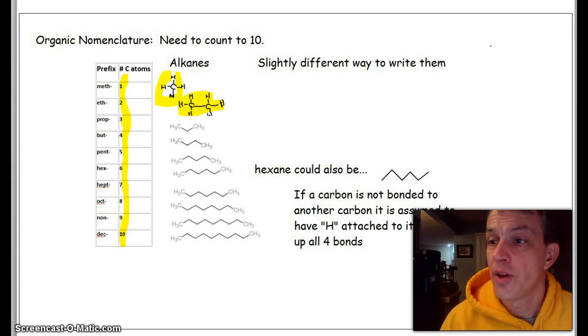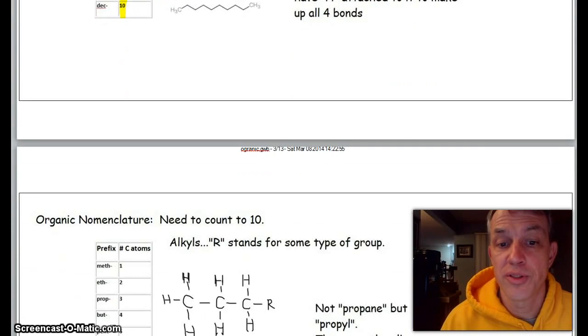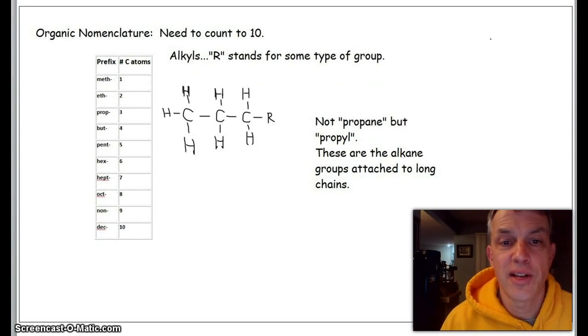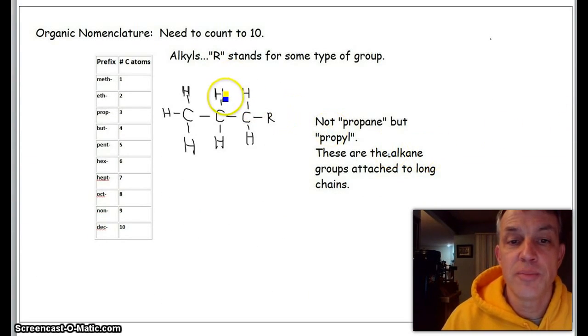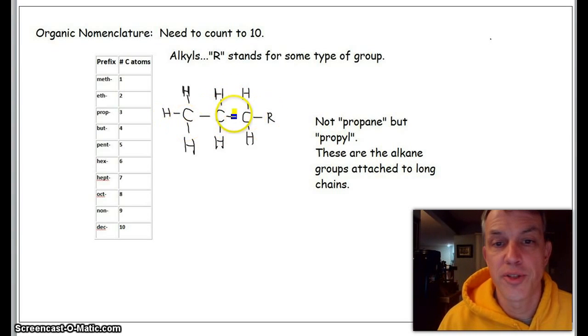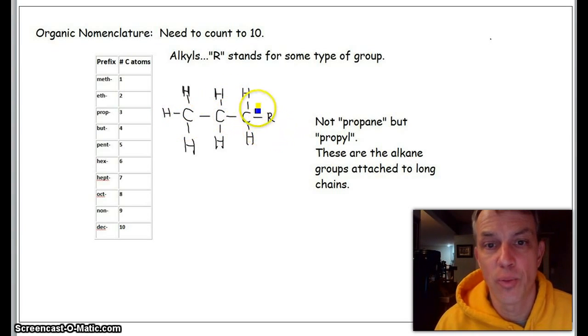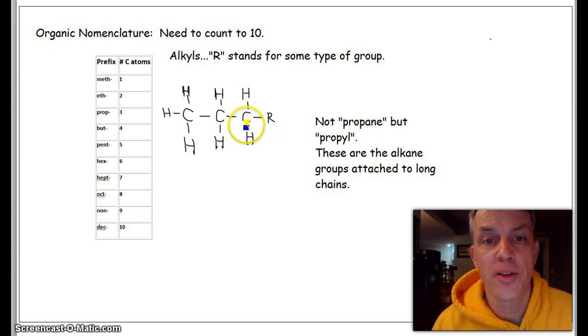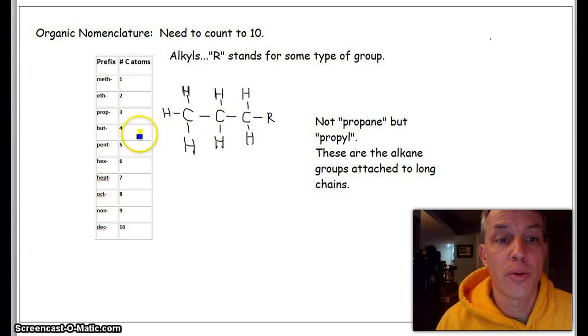Now, the other thing that we need to know is what happens when we put stuff on there. Again, we need to count to 10. Let's suppose that we take a little carbon chain like this three-carbon chain here and we stick it on something—we'll call that something R. It doesn't really matter what it is.